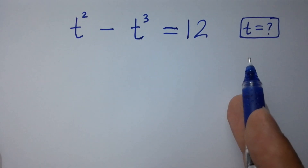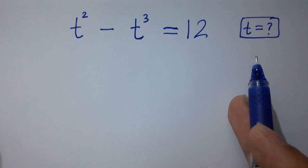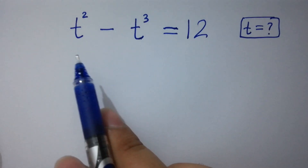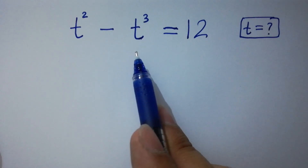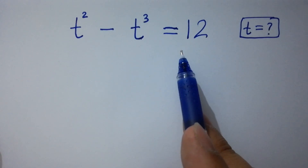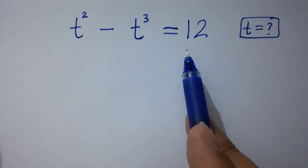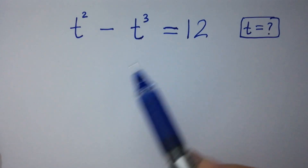Hello friends, find the value of t if t squared minus t cubed equals 12. Let's have a solution.